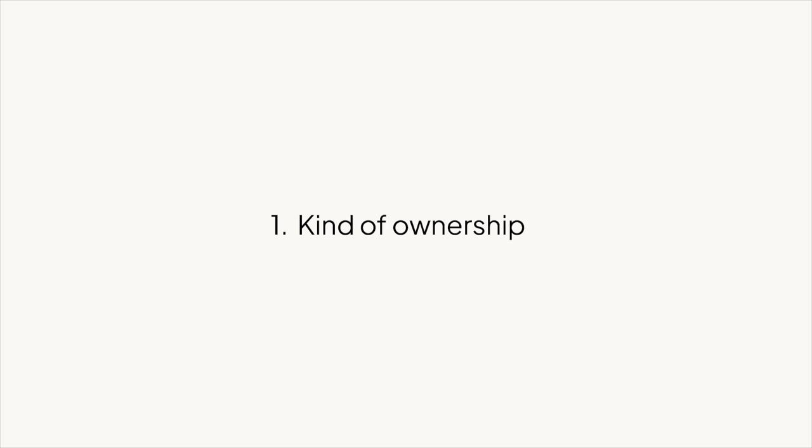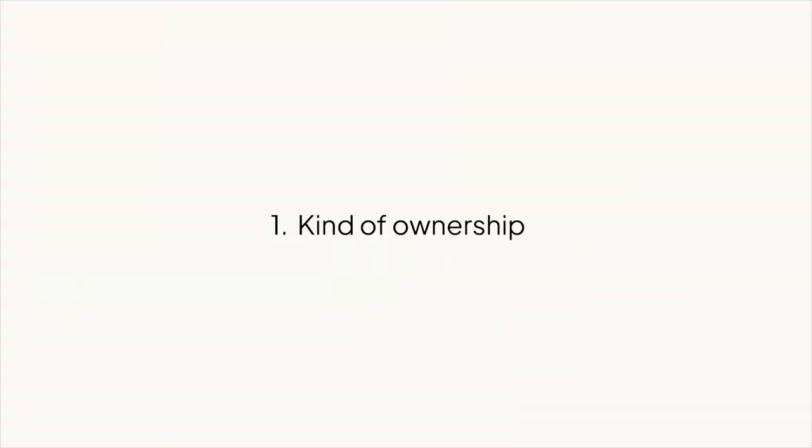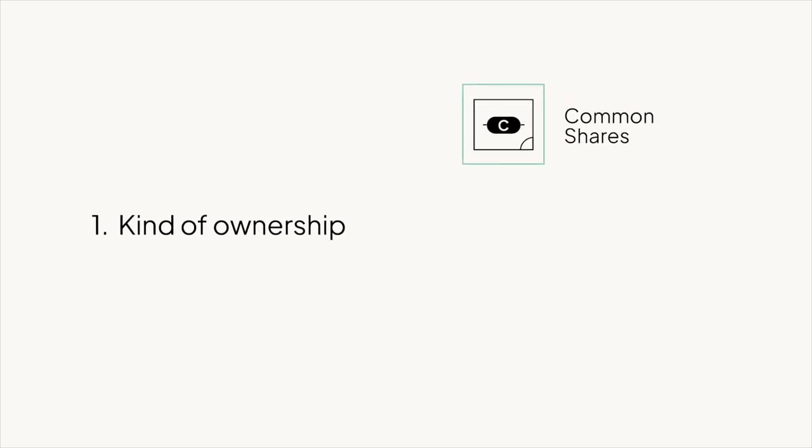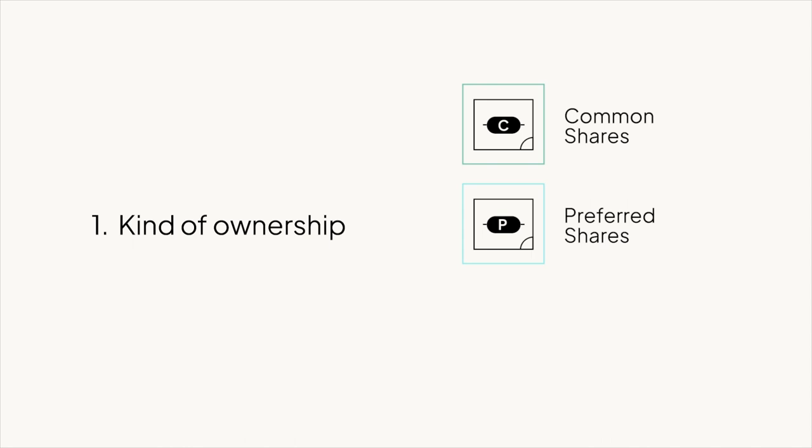What does a cap table keep track of? In short order, let's run through the main items. First, the cap table tracks exactly what kind of ownership everyone has. There's more than one type of equity that you can give someone. For example, some of your shareholders will have common shares, while others might have preferred shares, which gives them special rights and preferences. And other people might have convertible instruments that aren't even shares yet — think of them like baby equity eggs that are going to hatch into little shares at a later date. The cap table keeps track of all this stuff, so you don't accidentally mess up someone's ownership percentage.